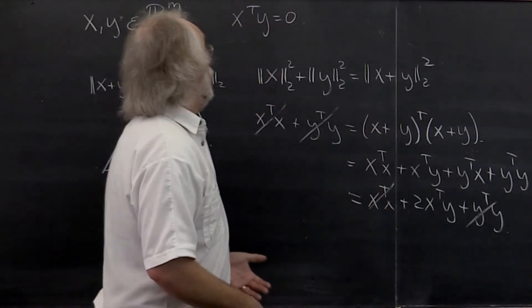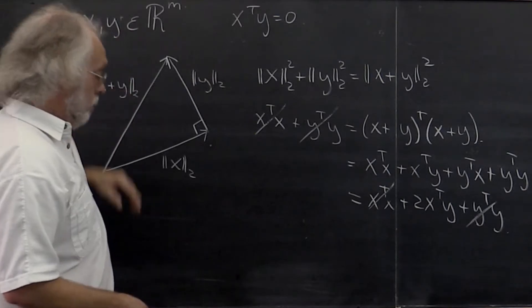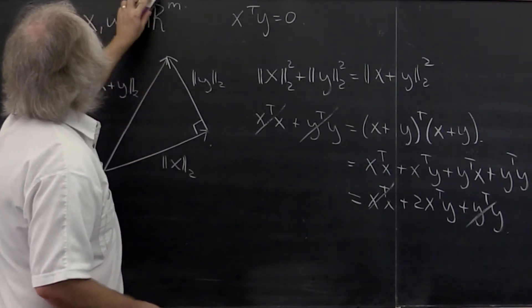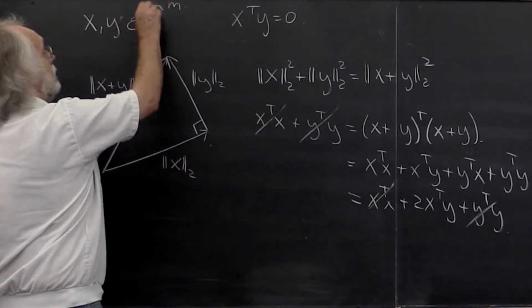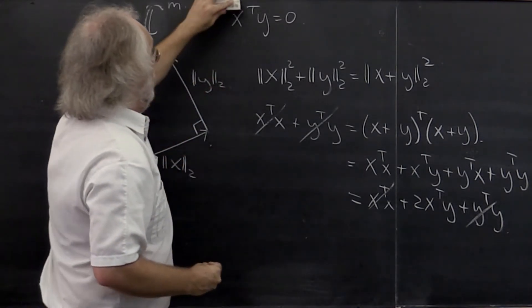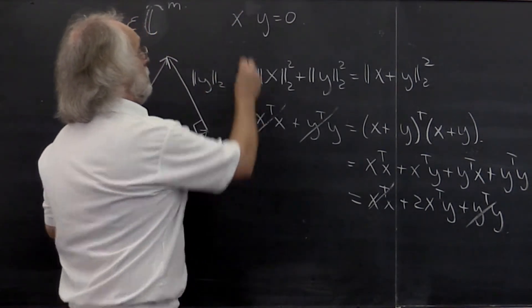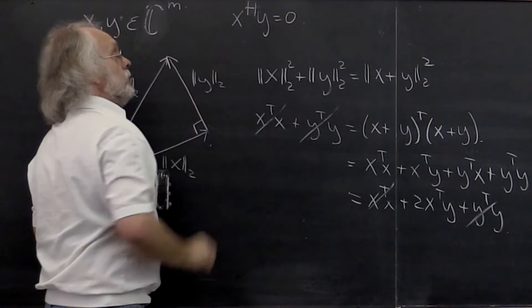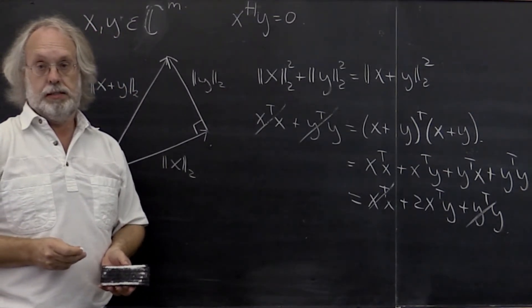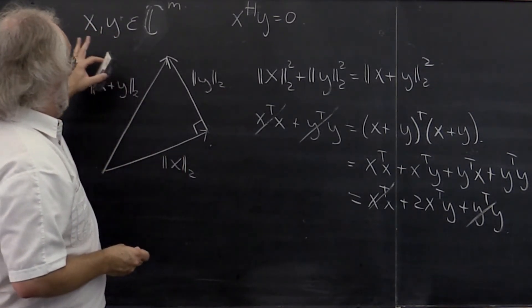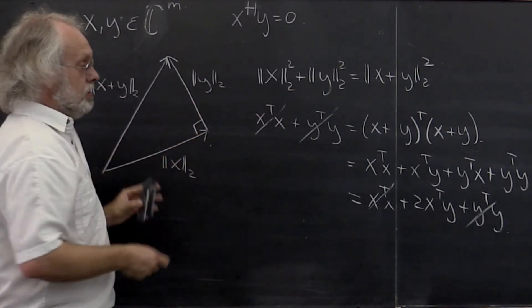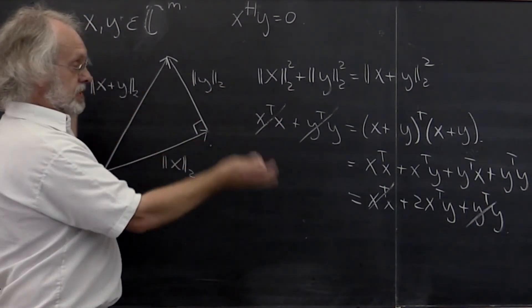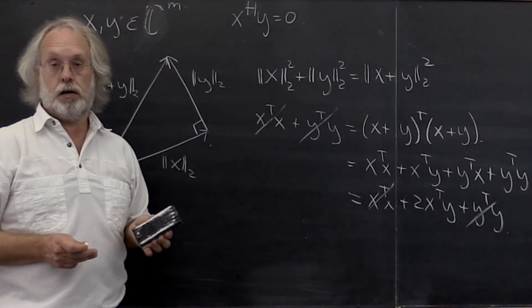Now when vectors are complex valued, then the same thing happens except with the Hermitian inner product. Now that's a little bit harder to picture. But the exact same results come out.